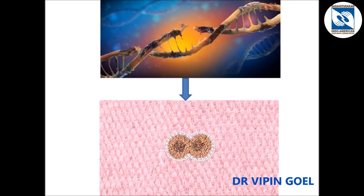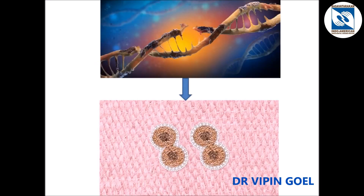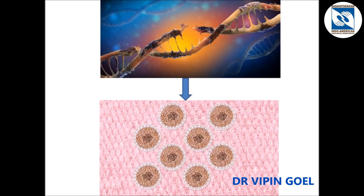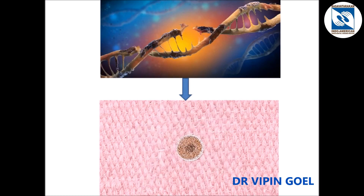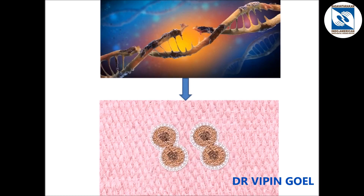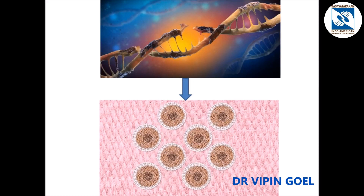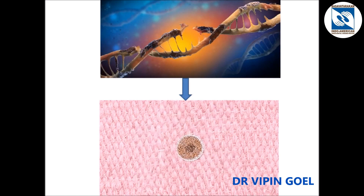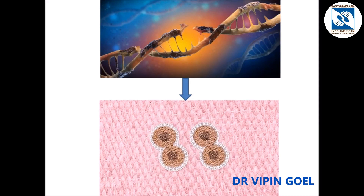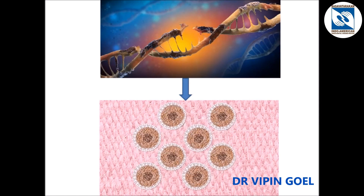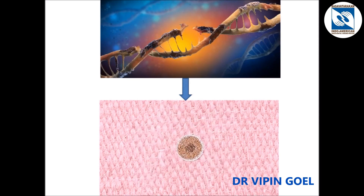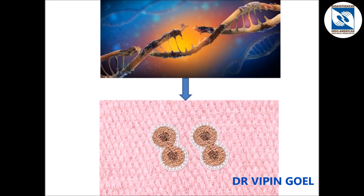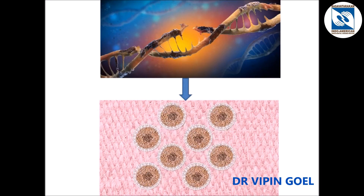In cancer, the damaged DNA is not repaired or the bad cell is not killed by the body. So the cancer cells go on multiplying many times to form a mass which is made up of cancer cells.